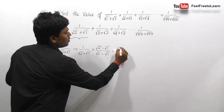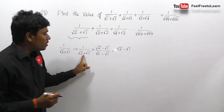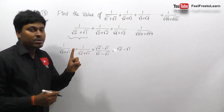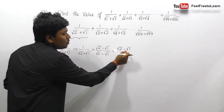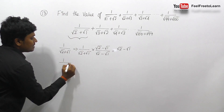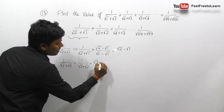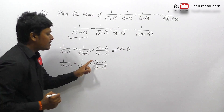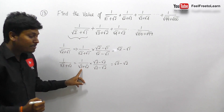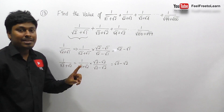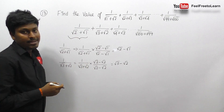Let me concentrate on the first term: 1/(√2+√1). Taking the conjugate (√2-√1)/(√2-√1), the numerator becomes √2-√1 and the denominator is (a+b)(a-b) = a²-b² = 2-1 = 1. So the first term simplifies to √2-1. Similarly, the second term 1/(√3+√2) gives conjugate (√3-√2)/(√3-√2), denominator 3-2=1, result: √3-√2.